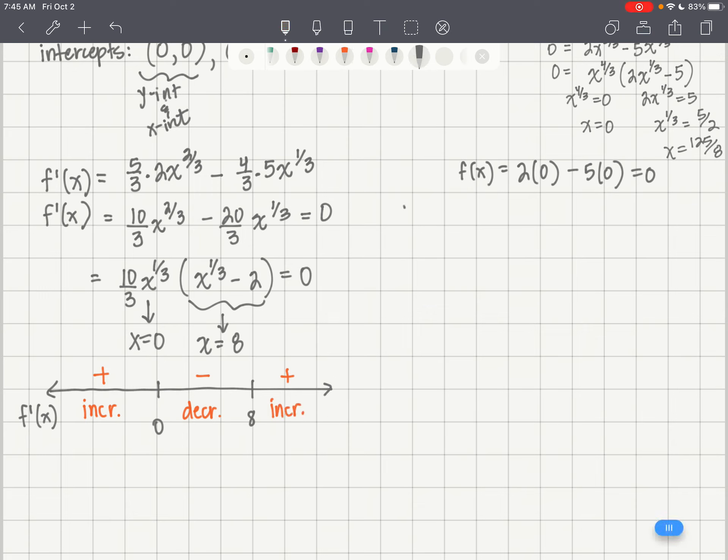Now it's time to find that second derivative. Our second derivative is going to take the first derivative and take its derivative. So I'm going to have 2/3 times 10/3 x to the negative 1/3 minus 1/3 times 20/3 x to the negative 2/3. And that simplifies to be 20/9 x to the negative 1/3 minus 20/9 x to the negative 2/3.